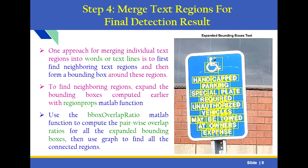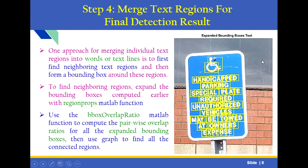The fourth step is to merge text regions for the final detection result. One approach for merging individual text regions into words or text lines is to first find neighboring text regions and then form a bounding box around these regions. To find neighboring regions, we expand the bounding boxes computed earlier with the RegionProps MATLAB function. We can also use the bounding box overlap ratio MATLAB function to compute pairwise overlap ratios for all the expanded bounding boxes. We then use a graph to find all connected regions.